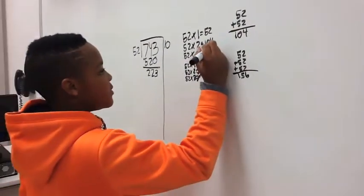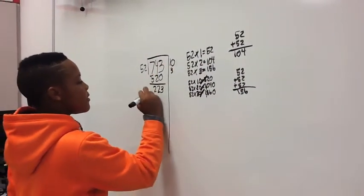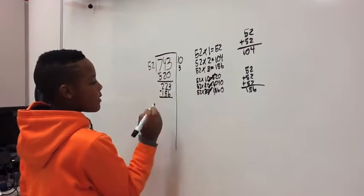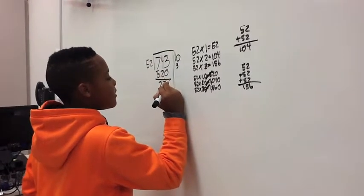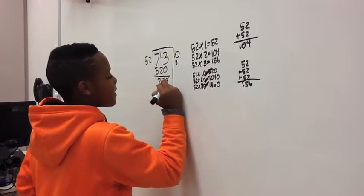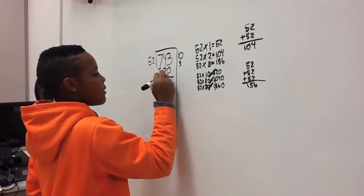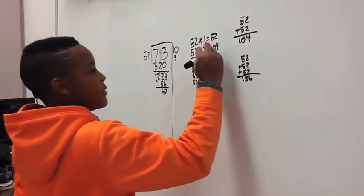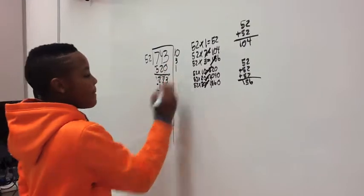And then the closest one to it is 156. So now 3 groups of 52 is 156. You have to do some regrouping. Now I can't use this and this anymore so I have to use 52. So you know you can do one more group.